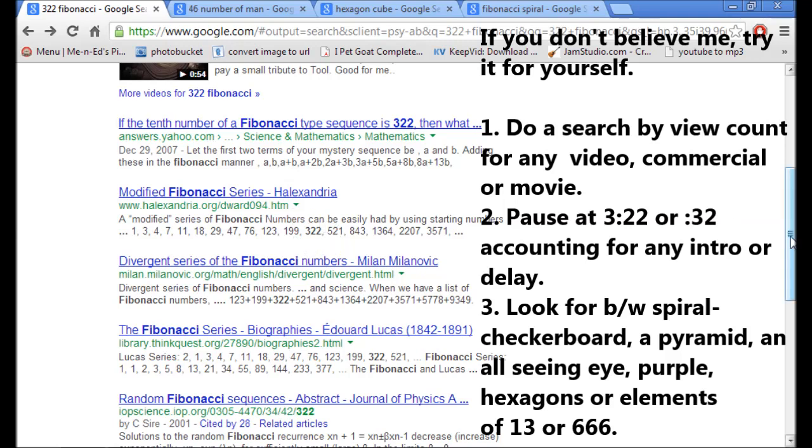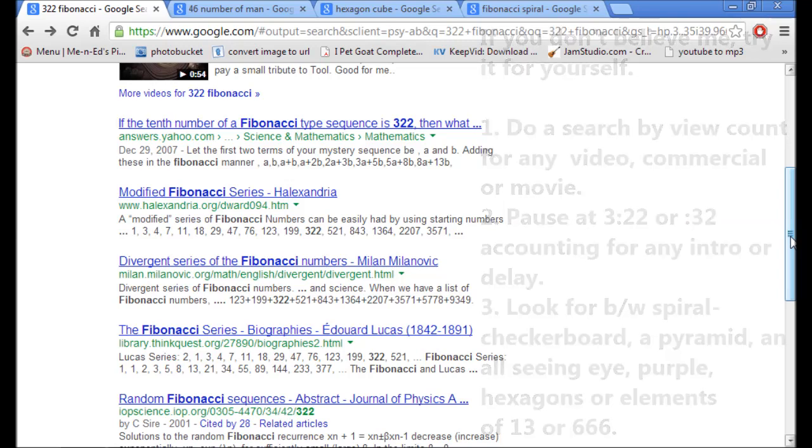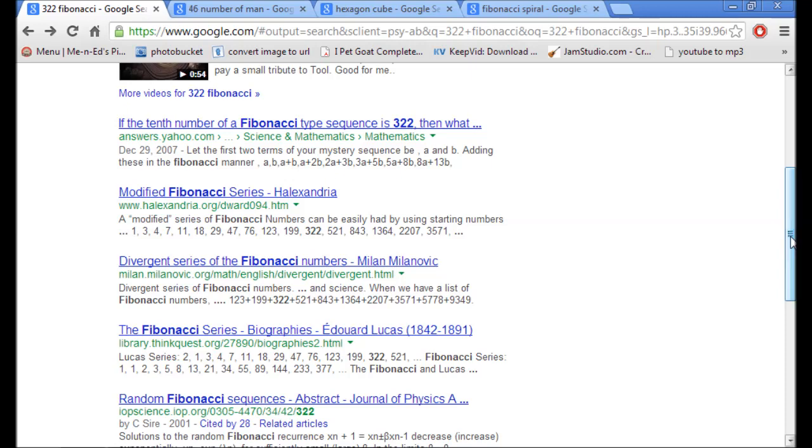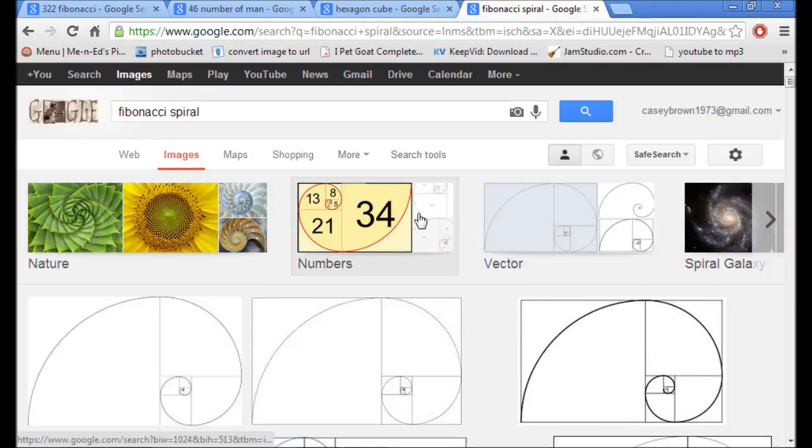Now what is the Fibonacci sequence, you're probably asking? No one's really been able to give you a good answer, but I'm going to explain it to you. The Fibonacci sequence is God's natural law of the universe from which all things of creation are designed - galaxies, cactus, sunflowers.